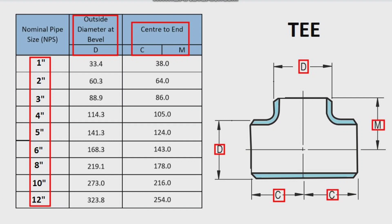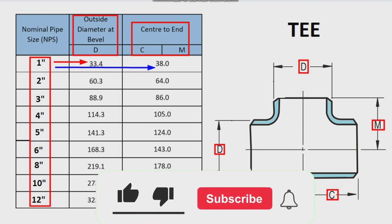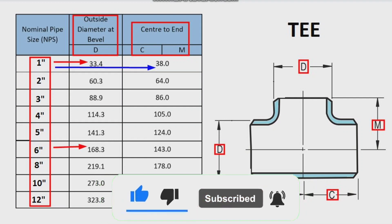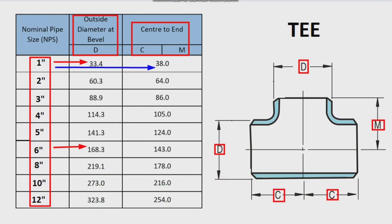Let's look at the sizes of some tees. For example, the outside diameter of a 1-inch tee (D) is 33.4 millimeters, and center-to-end C and M is 38 millimeters. Next, the outside diameter of a 6-inch tee is 168.3 millimeters, and the 6-inch center-to-end C and M is 143 millimeters.